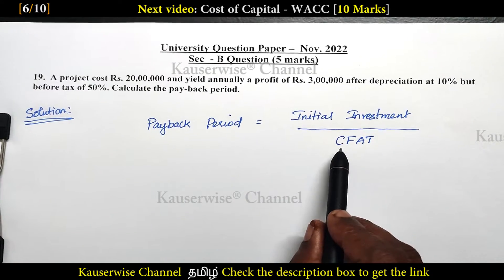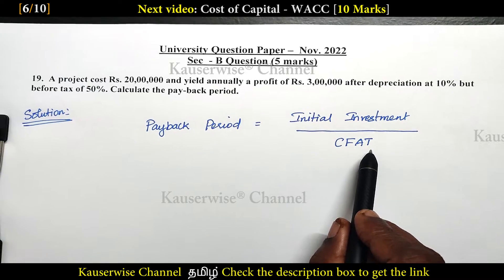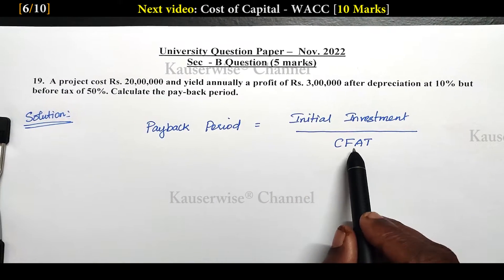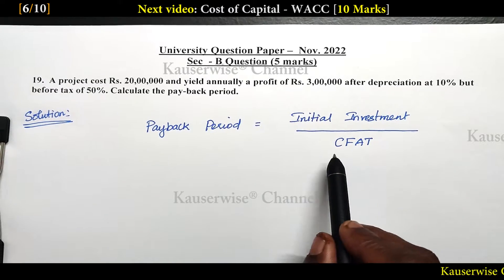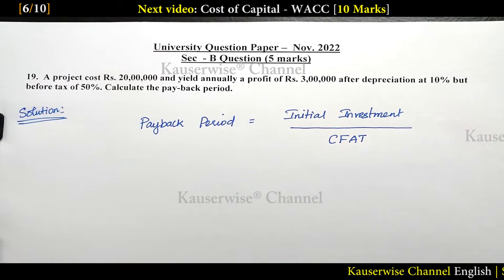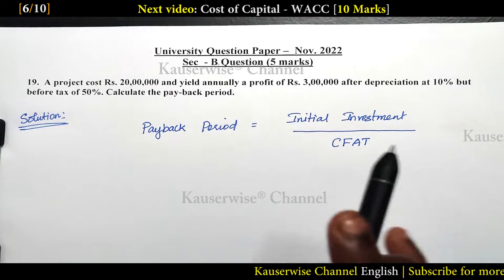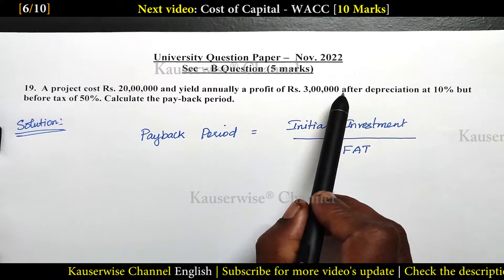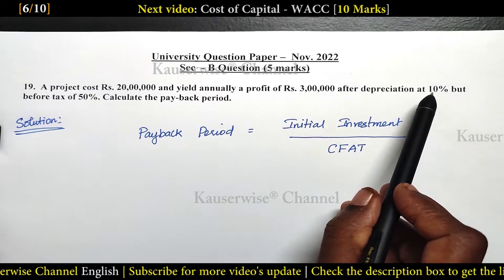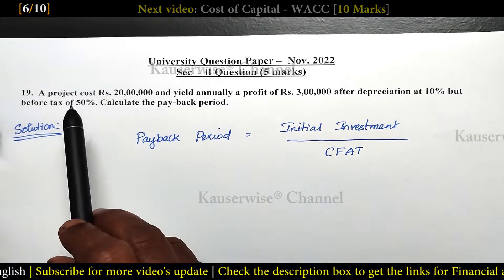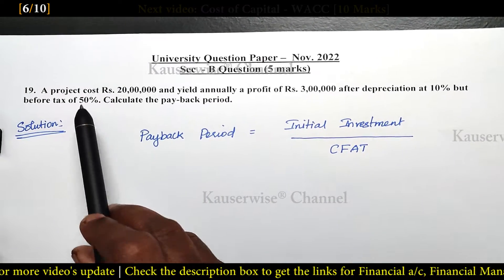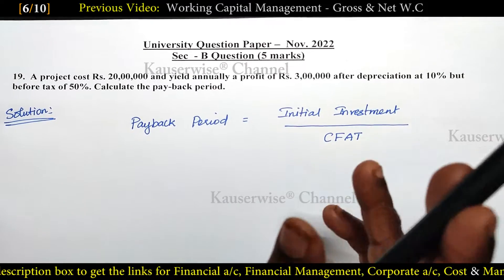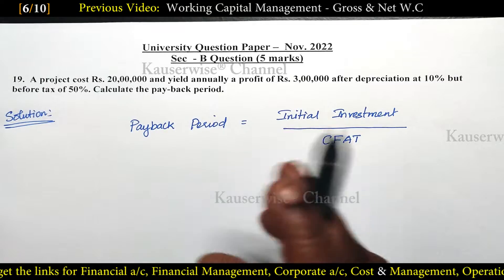CFAT stands for cash flow after tax but before depreciation. But in the problem, they have given 3 lakhs profit after depreciation at 10 percentage but before tax at 50 percentage. So we need to calculate profit after tax but before depreciation.